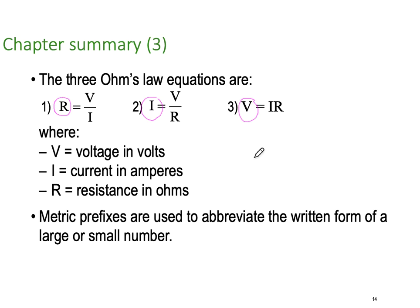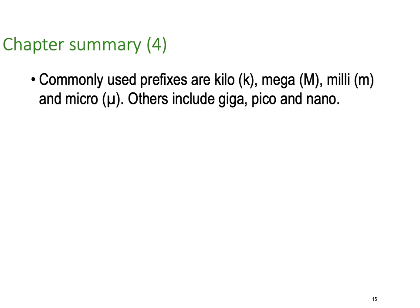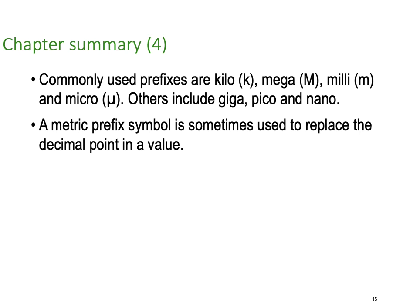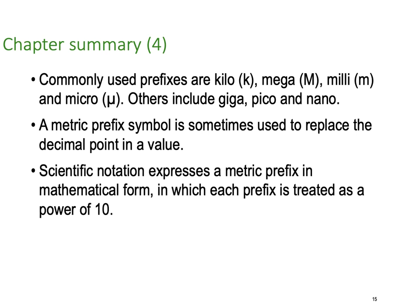We use symmetric prefixes to abbreviate the written form because the numbers get very large and very small. Commonly used prefixes are the kilo for thousands, mega for millions, milli for thousandths and micro for millionths. And others include the giga, the pico and the nano. A metric prefix symbol is sometimes used to replace the decimal point in a value, particularly on components and on drawings. Scientific notation expresses the metric prefix in a mathematical form in which the prefix is treated to the power as a power of 10.